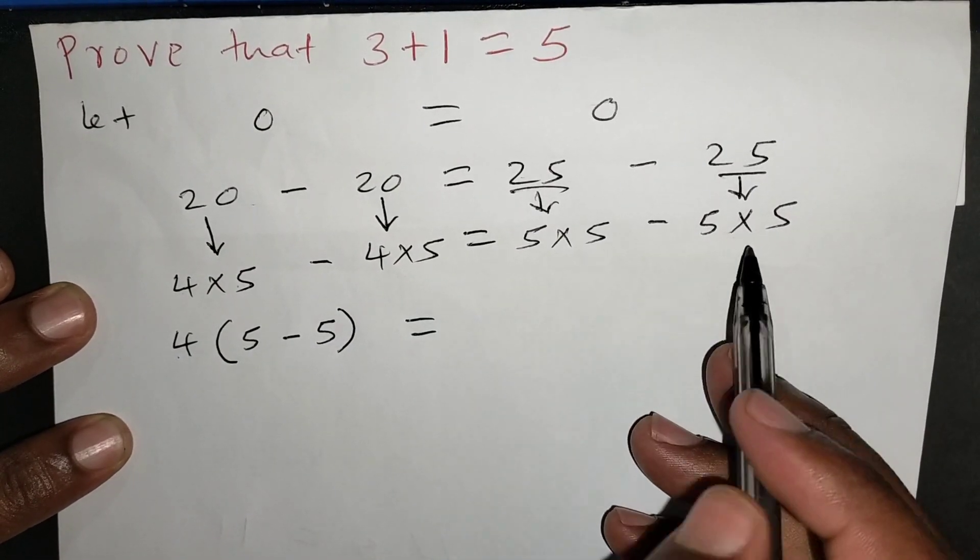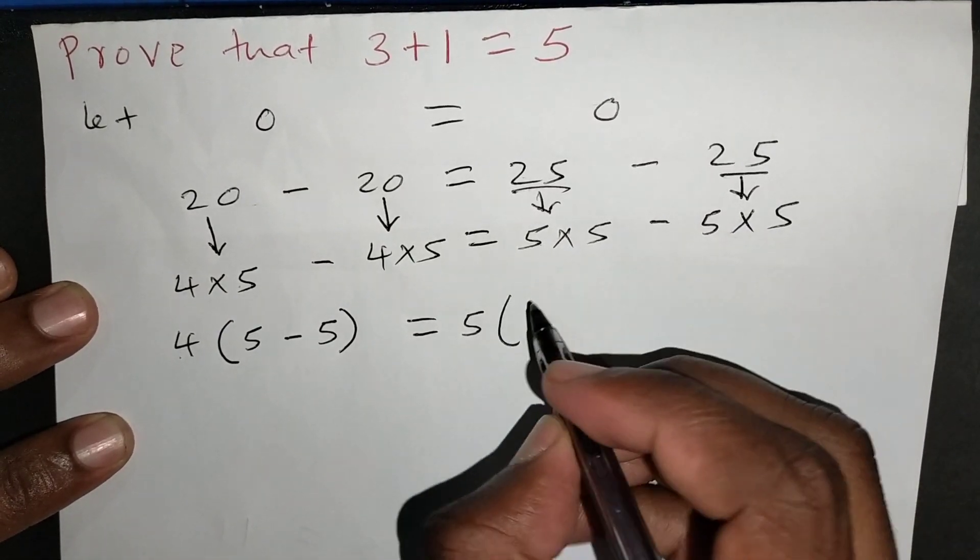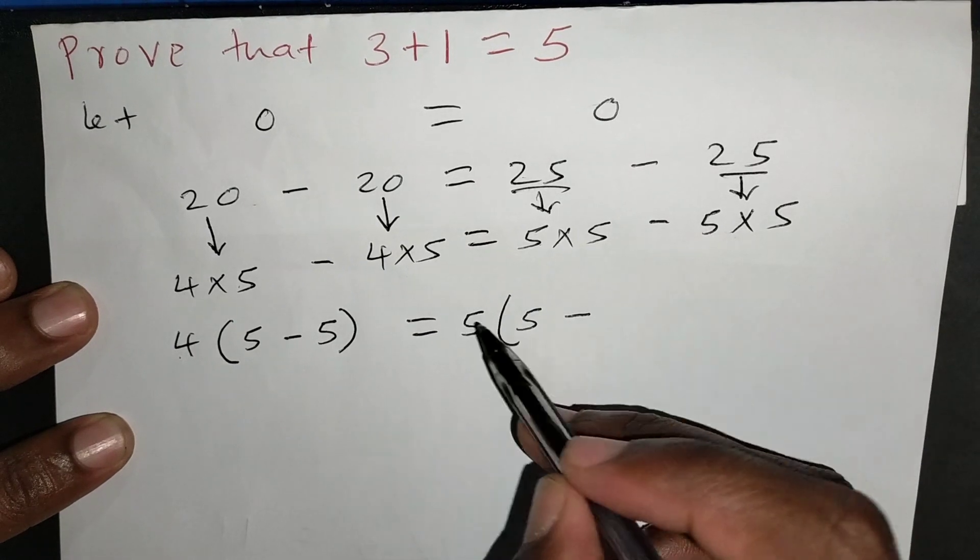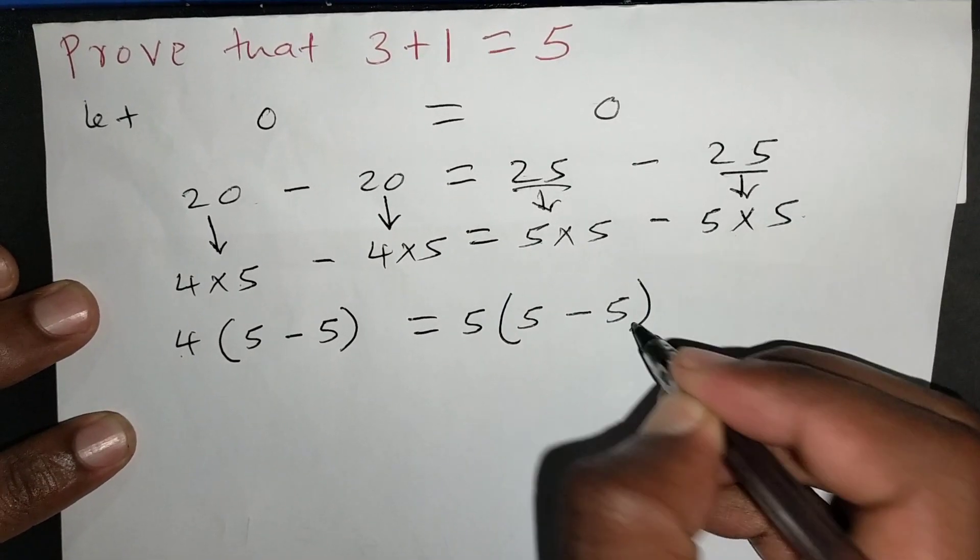Which is equal to, here 5 is common, so I'll factor out 5. 5 will go into 5 times 5, it will go there 5 times. Then 5 will go into negative 5 by 5, it will also go there 5 times.